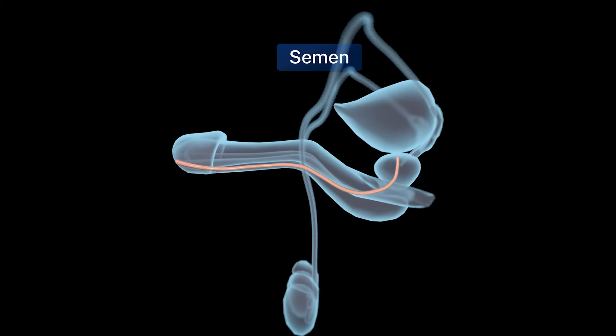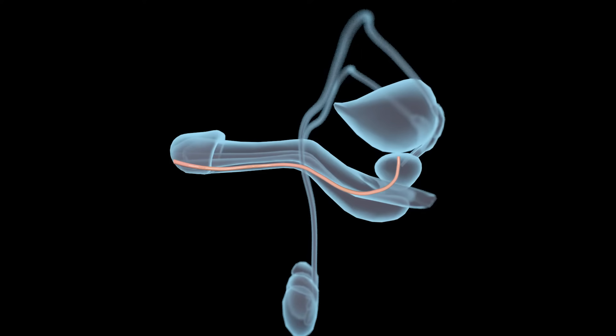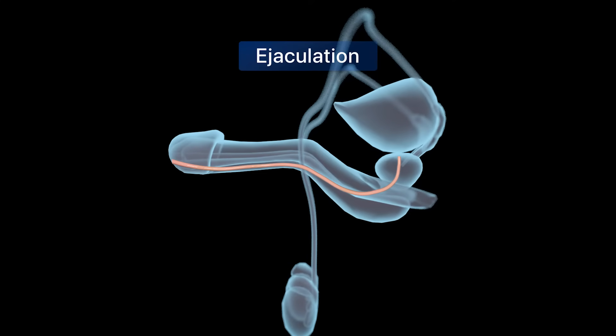The semen travels through the urethra and is expelled from the penis, and this action is called ejaculation.